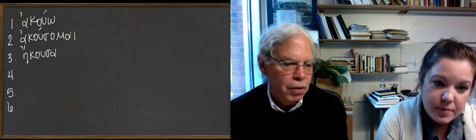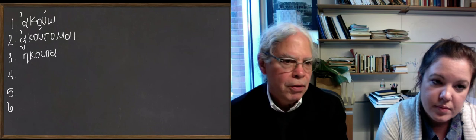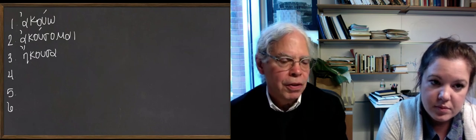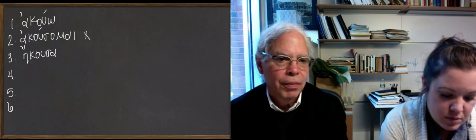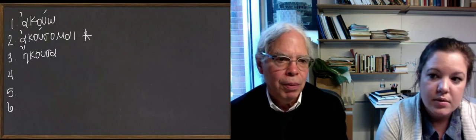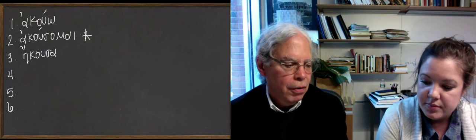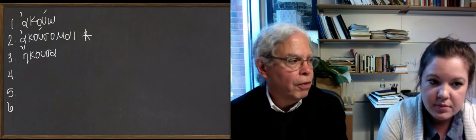And worry about the other principal parts later on. But there are some verbs like this in which you have just one of the four principal parts, and it's usually the future that's middle. Yeah, that's the only one that really we're talking about. There are verbs that have a deponent in the future and have no active form in the future.